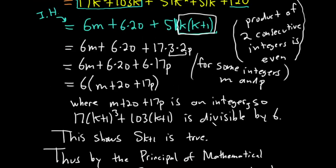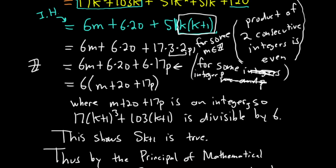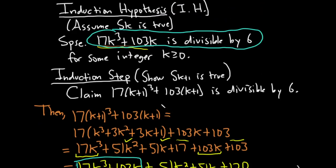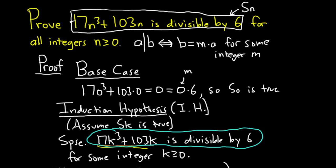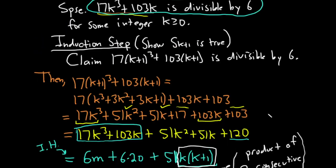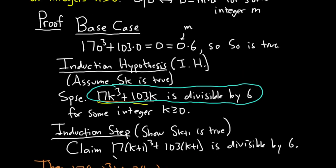The only thing that's a little sloppy is that when I introduced 6m, I should have said 'for some m in ℤ' — where ℤ is the set of integers. And when introducing 2p, I should have said 'for some integer p' on that line. You want to say those things to make it a perfect, airtight proof. Hopefully this has been helpful to someone learning induction. It's a good problem because it requires that extra knowledge about consecutive integers, which I think is a sticking point for a lot of people. Good luck, and take care.